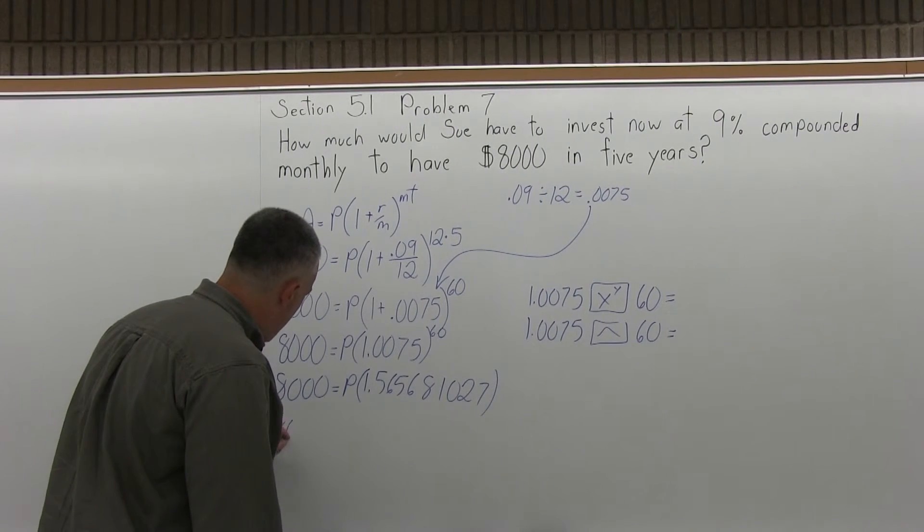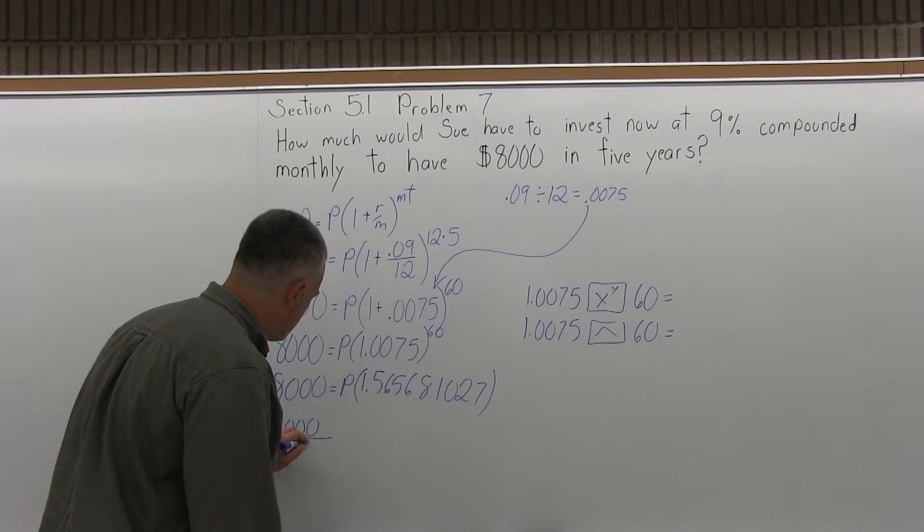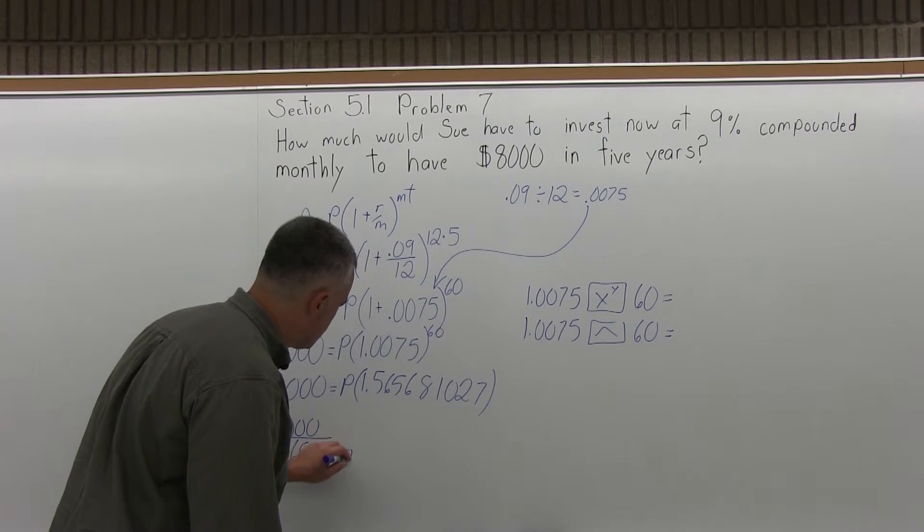So I'm going to have 8,000 over that big decimal thing, 1.565681027.